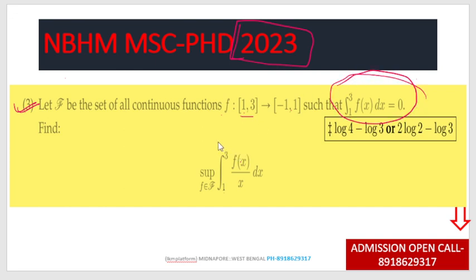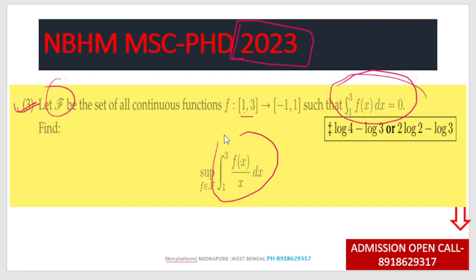The supremum over A of the integral from 1 to 3 of f(x) dx — we need to find what this supremum value equals.